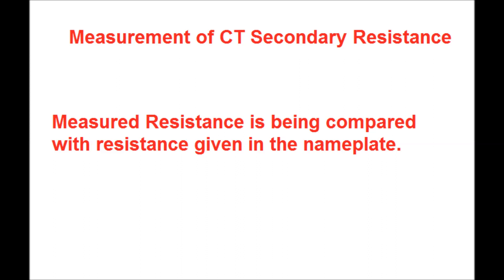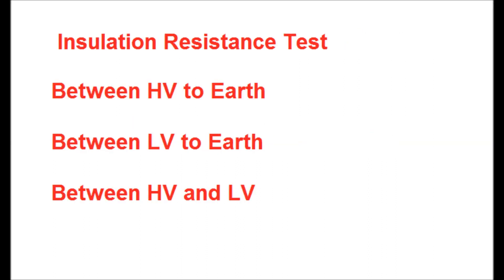Then the insulation resistance (IR) test of the CT is performed. Before this IR test, all secondary connections are disconnected from the CT secondary junction box (JB). First, the IR test is done between HV (primary) to earth using a 5kV or above megger, and the result is recorded.